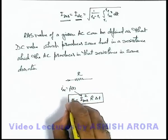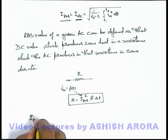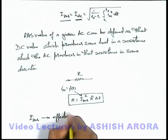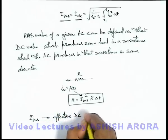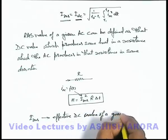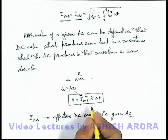We can use RMS value of AC as the effective DC value for any AC current. RMS current is also called effective DC value of a given AC, whenever we require to calculate the amount of heat produced or power relations.